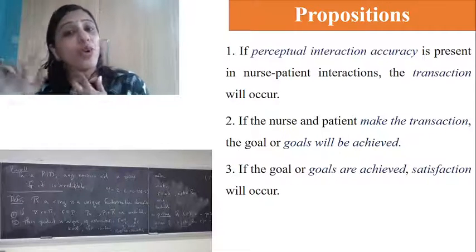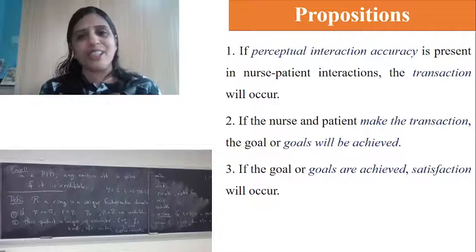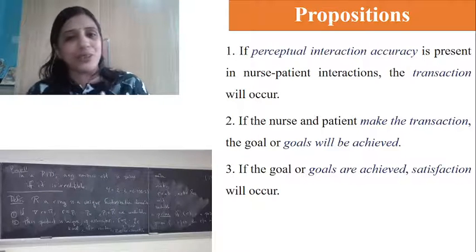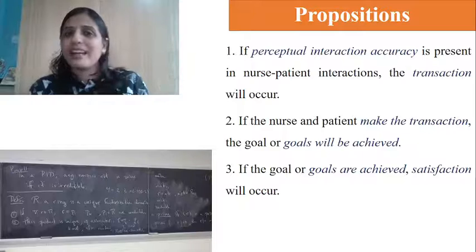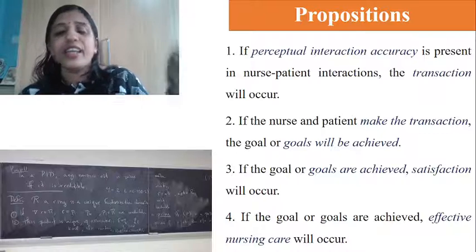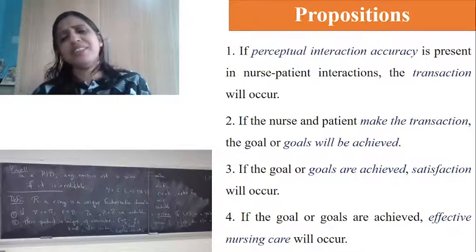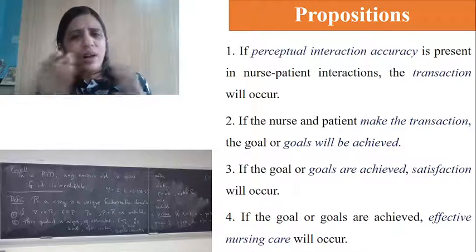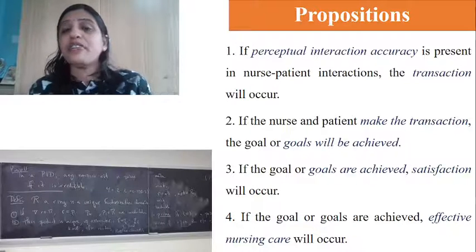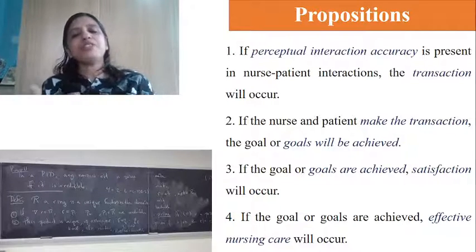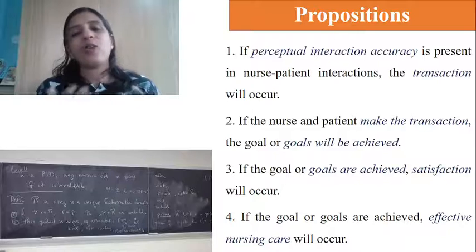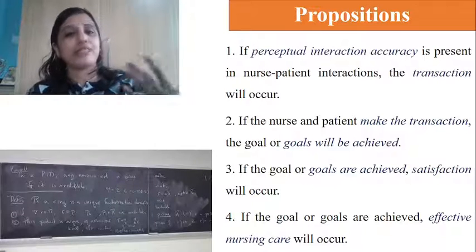Fourth proposition: if goals are achieved, effective nursing care will occur. When one goal is attained, we set the next goal, and effective nursing care becomes a positive feedback stimulus. Fifth: if transactions are made in nurse-patient interaction, growth and development will be enhanced — not only for the nurse who grows in skill and efficiency, but also for the patient who shows observable improvement.